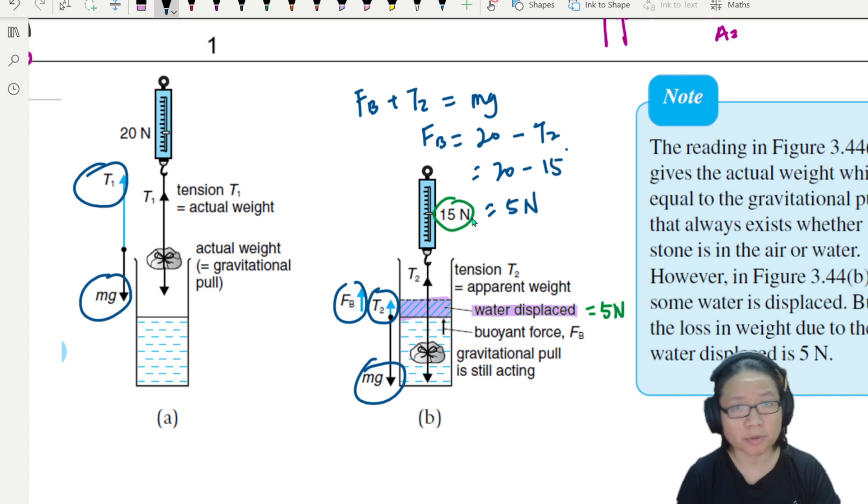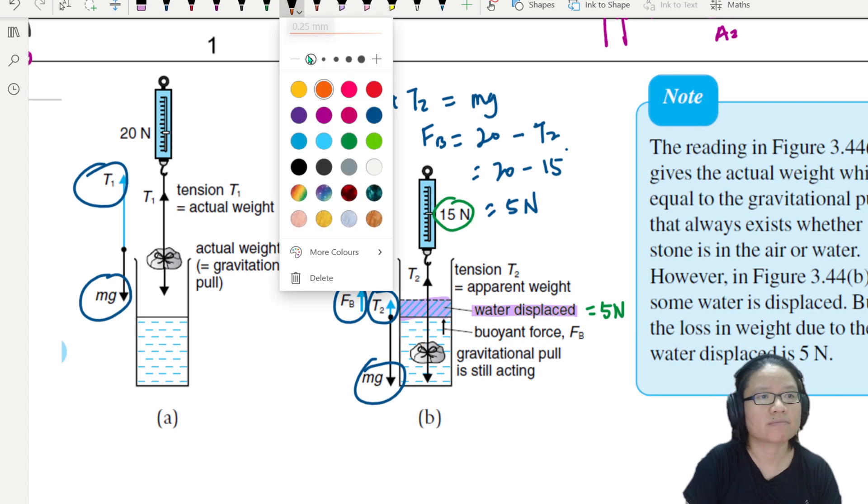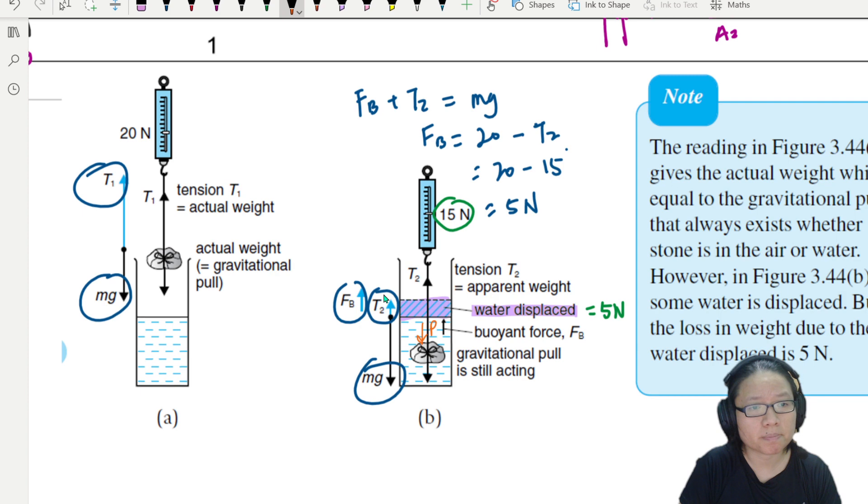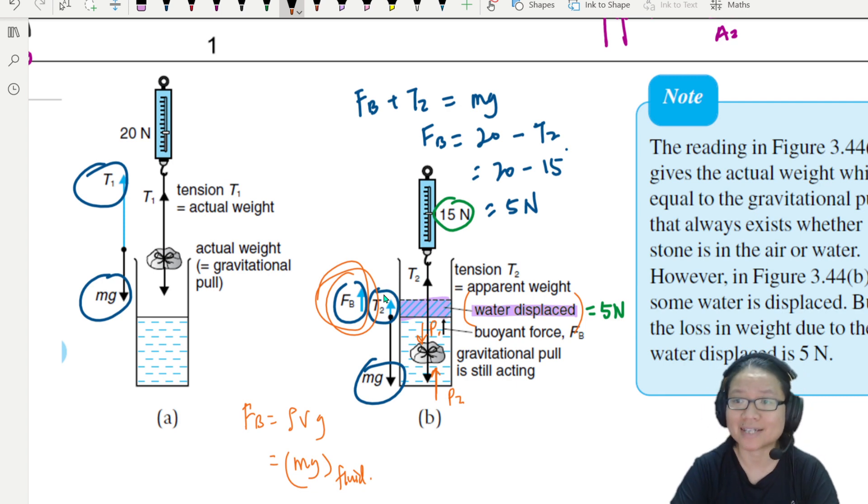Two things to note. Just as a reminder or recap, we learn that it is the pressure difference between the top surface P1 and the bottom surface P2 that causes the buoyant force. Number two, to find this buoyant force, you can use the equation V rho g or rho V g. It doesn't matter. Multiply only. But this is also equal to mg of the fluid displaced. mg of the fluid displaced. Be careful when using density equations.